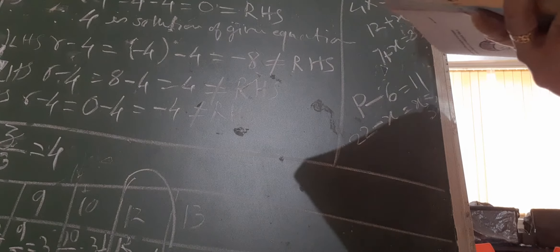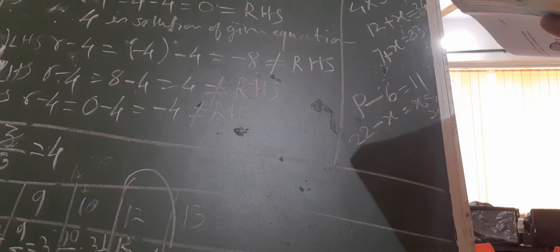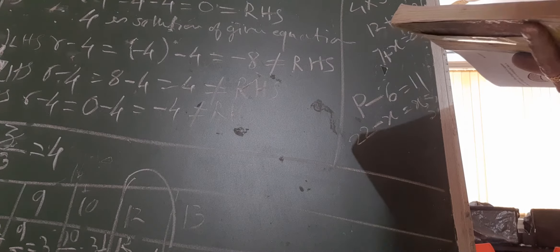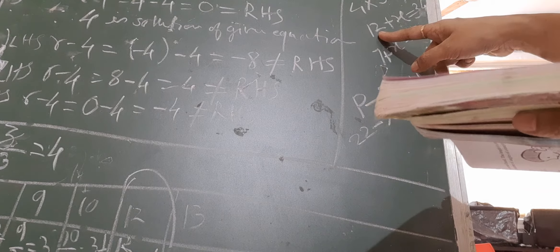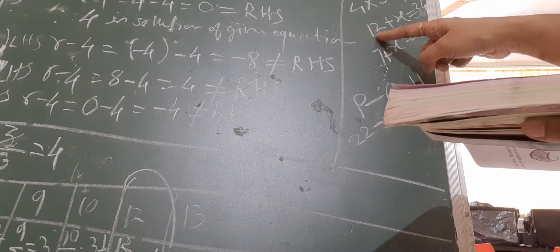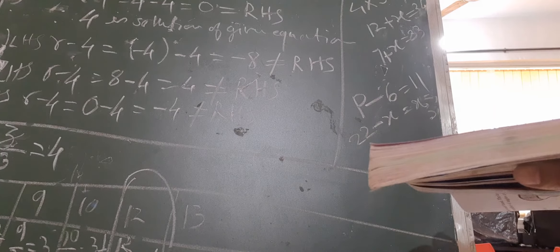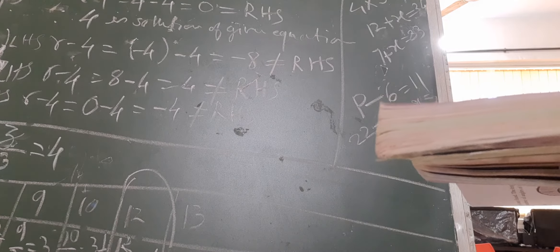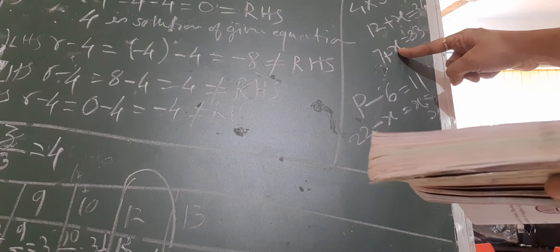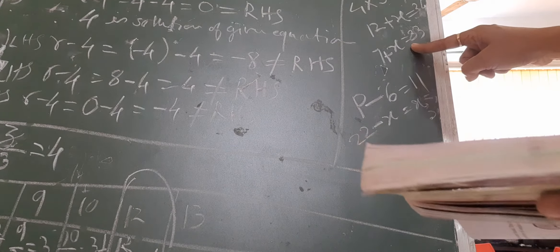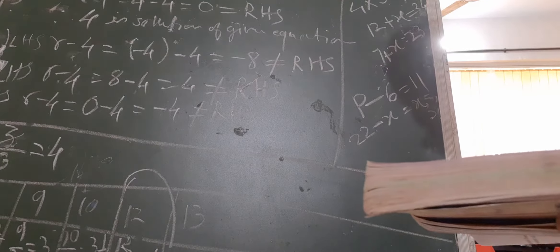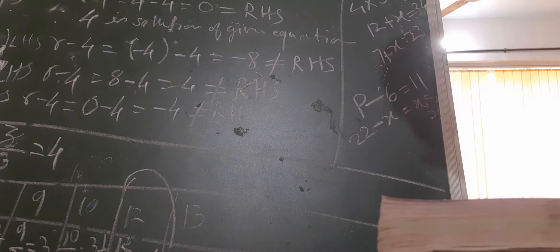For the fifth question, some riddles are given. First: 'Go round a square, count every corner, thrice and no more.' A square has 4 corners, thrice of that gives 12, and you add something to get 34. So the equation is 12 + x = 34. Second riddle: 'Each day of the week, make an up count from me, that gives you 23.' There are 7 days in a week, up count means adding x. So the equation is 7 + x = 23.